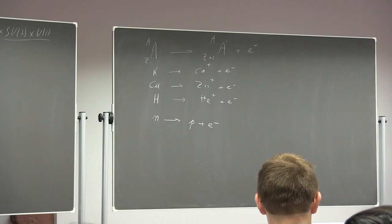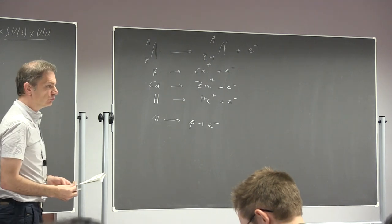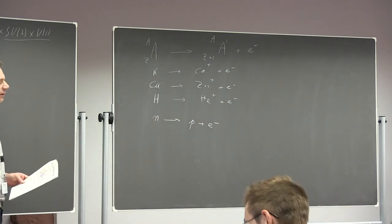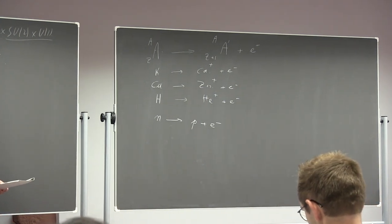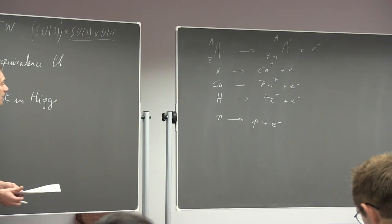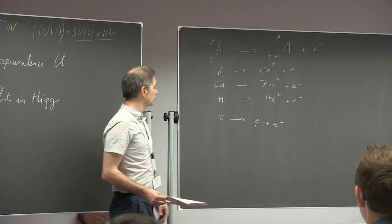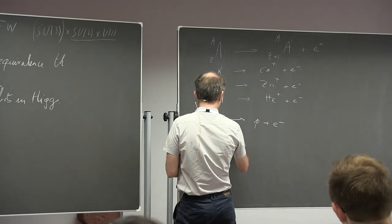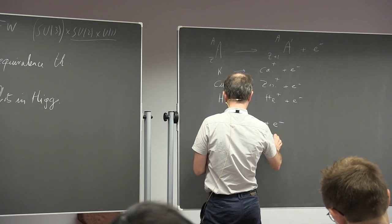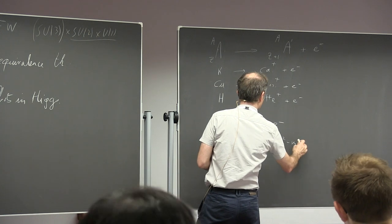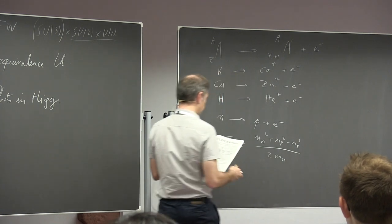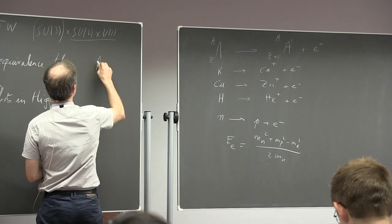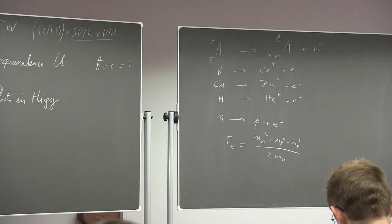So it's a decay of one particle into a two-body final state, and from the simple laws of special relativity you can compute the energy of the final-state particles as a function of the masses — it's pure kinematics. The energy of the electron is simply (m_n² + m_p² - m_e²) / (2 m_n). We will work in natural units where ħ = c = 1, so I will drop the c factor in all expressions.